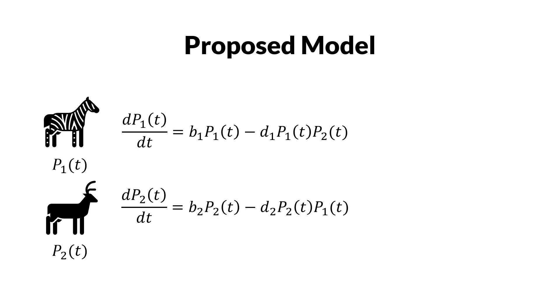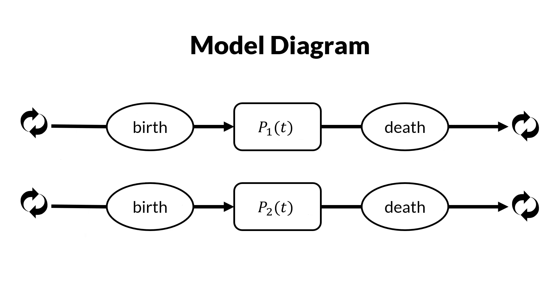Now let's draw the model diagram to visualize each variable. First population is added by the births which are calculated from birth rate times population, and then subtracted by the death. The deaths are calculated from death rate times population for species 1 times the population for species 2.